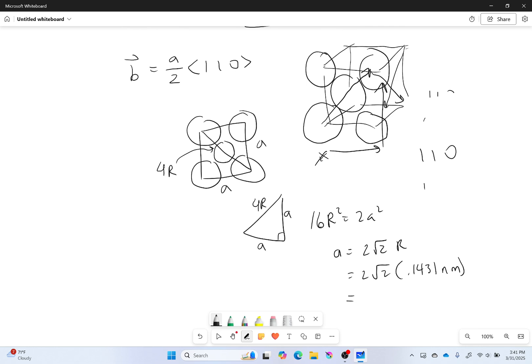Let's put it in our calculator and see what it gets. I got that's equal to 0.4047. So my Burgers vector would then be equal to half of that, so 0.202 <110>.